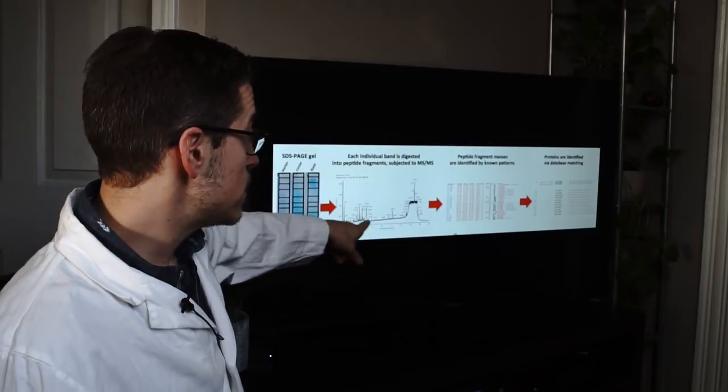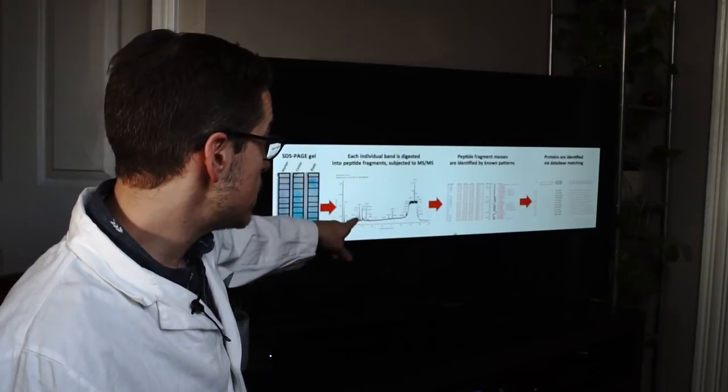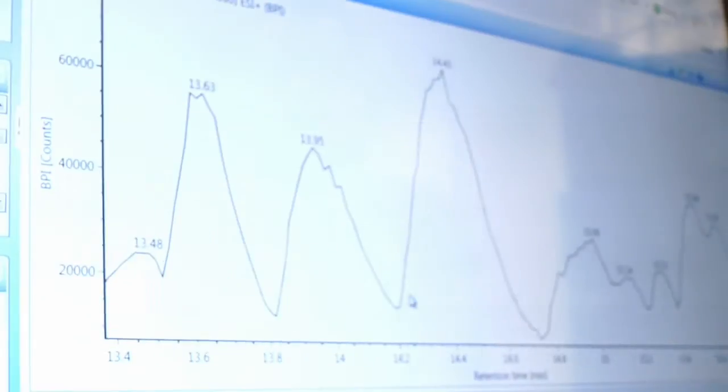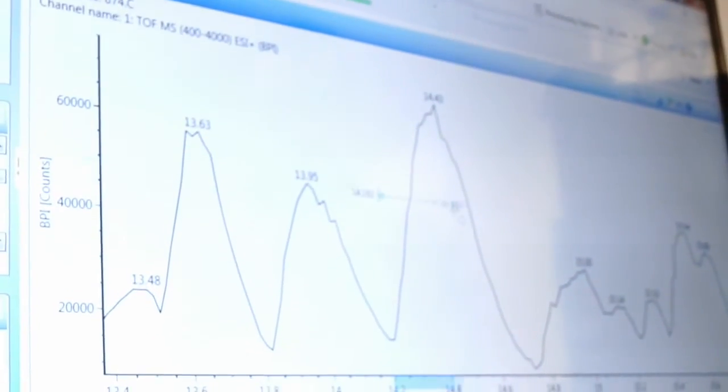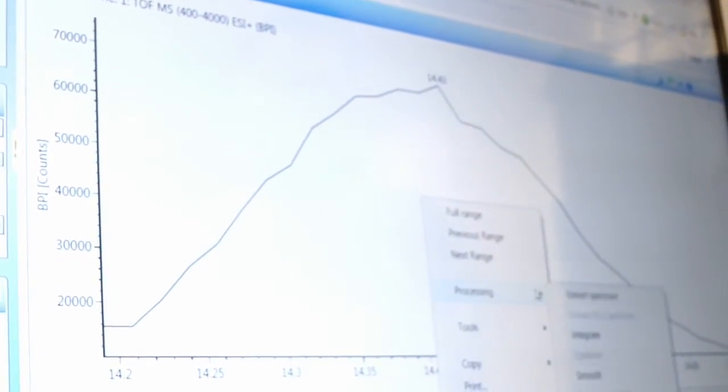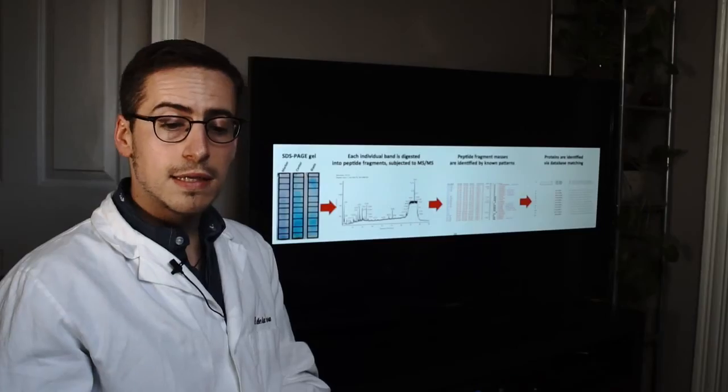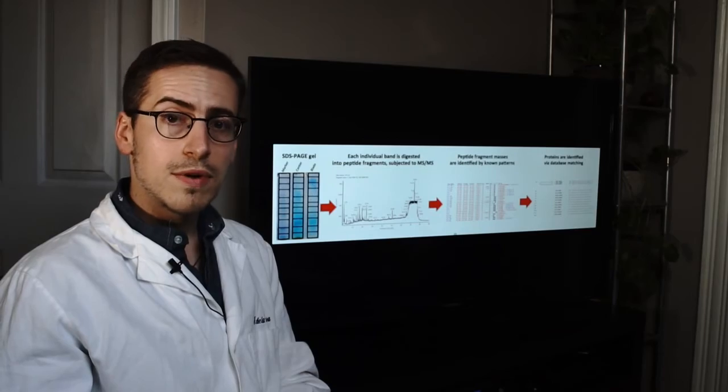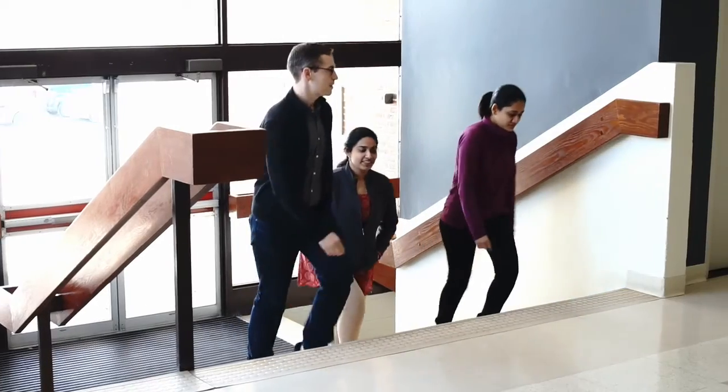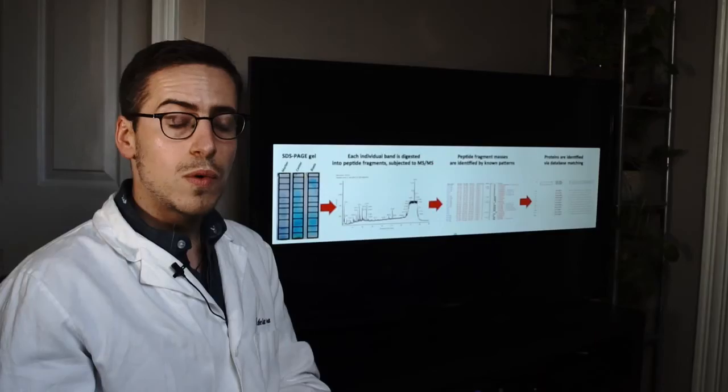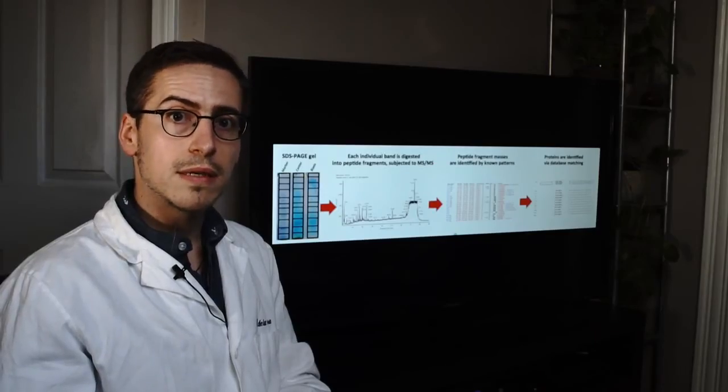That might look like random noise to some, but actually those peaks each represent a protein. We're able to use databases to match those fragment masses based on known patterns, and then we can specifically identify which proteins are there. This method provides early and easy detection, and that translates directly to lives saved. When we predict a woman is developing ovarian cancer and catch it earlier, that means we can save lives.